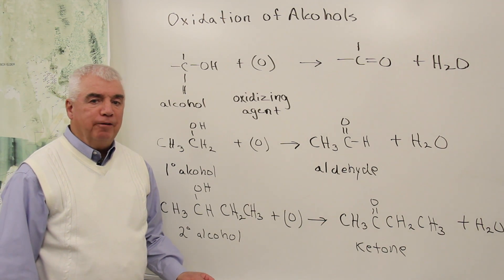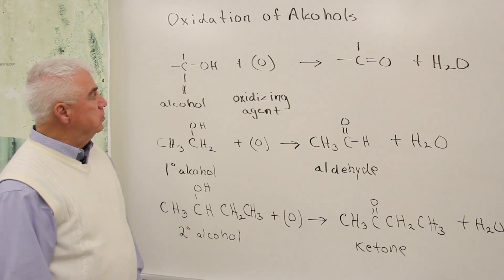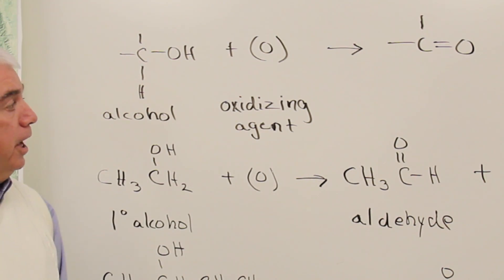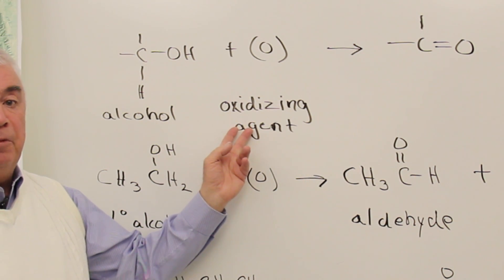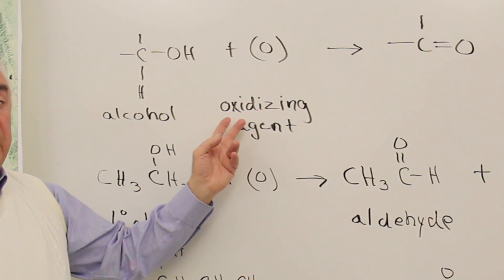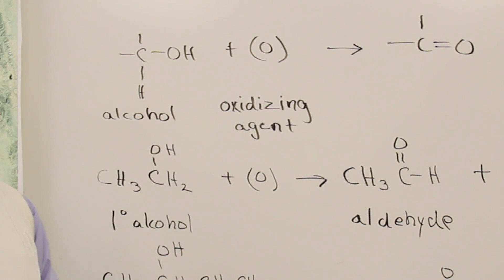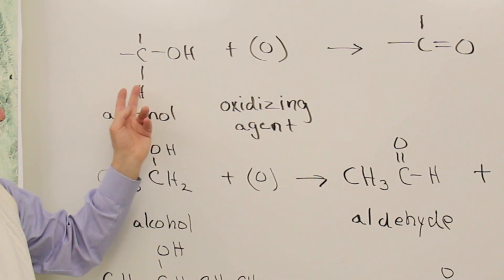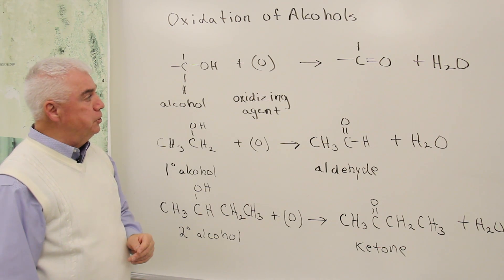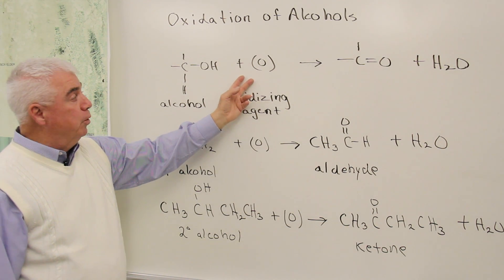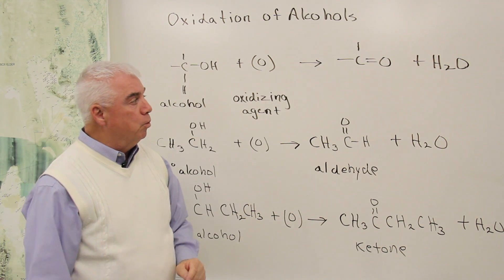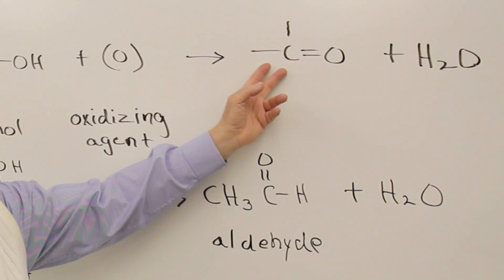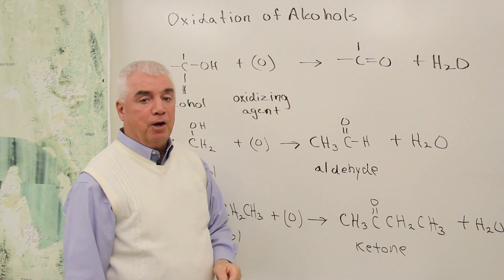The second reaction of alcohols we'll look at is the oxidation of alcohols. The O in parentheses symbolizes an oxidizing agent — it could be something like potassium dichromate or potassium permanganate. These are substances that have the ability to remove two hydrogens from this structure: one from the OH and one from the carbon that the OH is attached to. To balance the equation, we've shown O and the two H's forming water, and the other product has a double bond between the carbon and the oxygen.